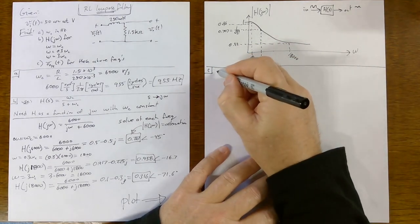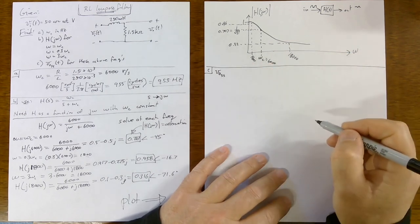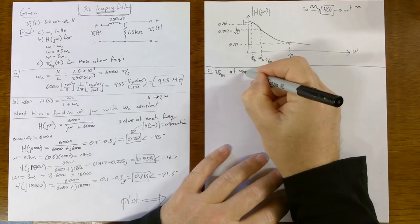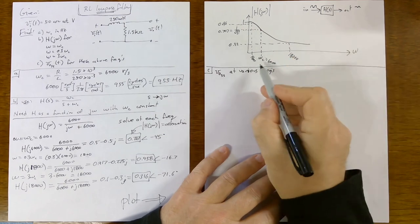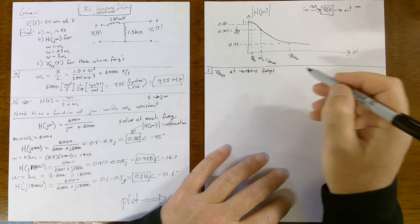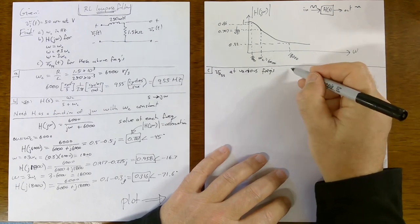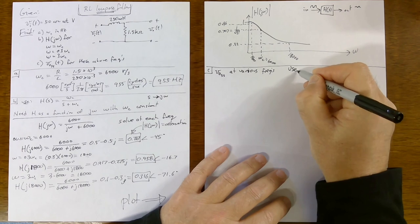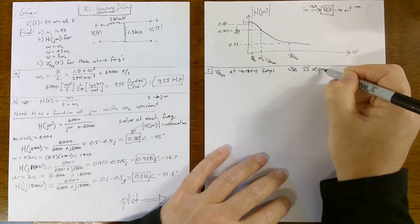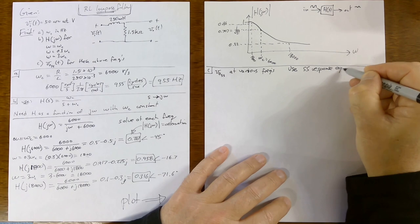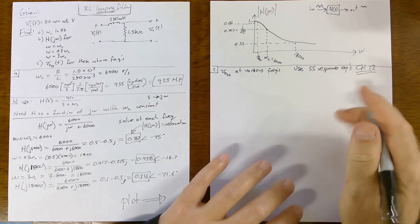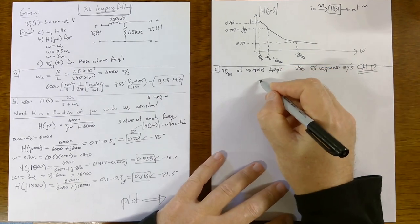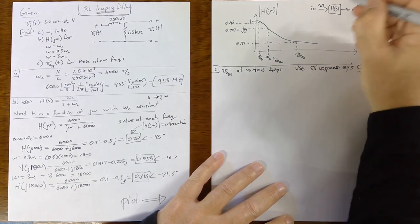For part C, we want the time domain output signals at steady state at these three frequencies: 1,800, 6,000, and 18,000 radians per second. We're going to use the steady state response equations from chapter 12.